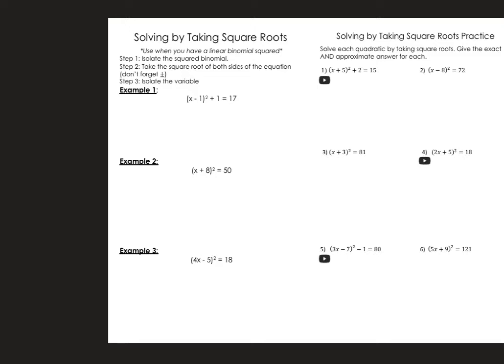In the previous lesson, we learned how to solve quadratics by factoring, but now we're going to learn how to solve quadratics by taking square roots. We use this when we have a linear binomial squared. The steps are to isolate the squared binomial, then take the square root of both sides, and then isolate the variable.